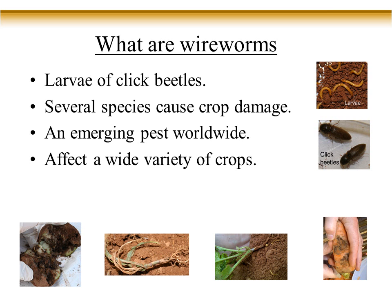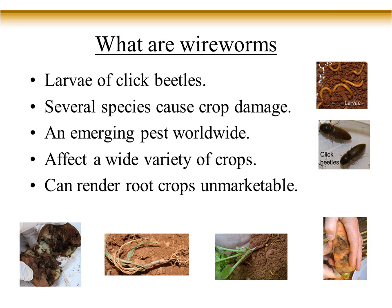Looking at the type of damage wireworms do across several crops: you can see this is cabbage and they've eaten all the cabbage transplants. With corn, the grower had to plow this field in because it was so badly damaged. That's cranberry, and you can see big patches where wireworms have eaten the crop. You also have them feeding on carrots, onions, and potatoes. This is actually from a farmer's field — he had to plow it in because it was so badly damaged. They cause a lot of damage to different crops.